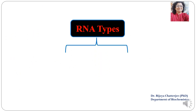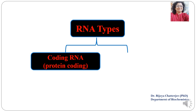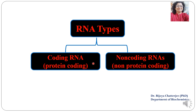RNA are of two types basically. The first type is the coding RNA — it is that RNA which codes for proteins. The second category includes the non-coding RNAs, which means these RNAs do not form any proteins. If you remember, in transcription when the mRNA is formed it has exons and introns. The exons are those parts which code for proteins, whereas the introns are those parts which do not form any proteins. So the non-coding RNAs include the introns.